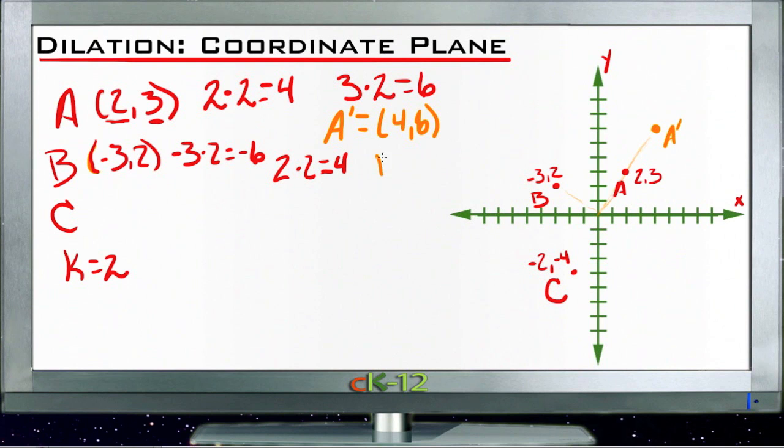So B' would be negative 6, 4. And so again, off in exactly the same direction, we go out to negative 6 and 4, right about there.